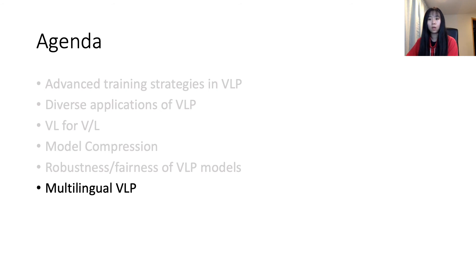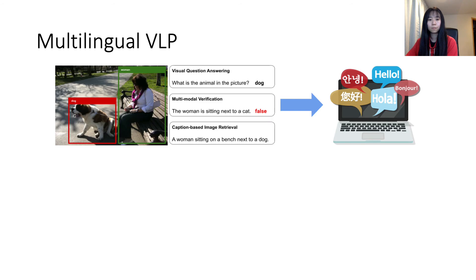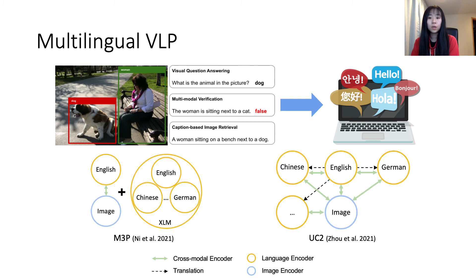In the last part of the talk, I'll cover two works that extend current English-only VLP to multilingual VLP. The majority of existing research on VLP only focuses on English-based vision and language problems. How can we perform multilingual multimodal pre-training to learn a unified framework handling vision and language tasks in various languages? There are two concurrent works along this direction: M3P and UC2. M3P leverages multilingual text data plus paired English image data, and UC2 augments image-text pairs in English with other languages via off-the-shelf machine translation models.